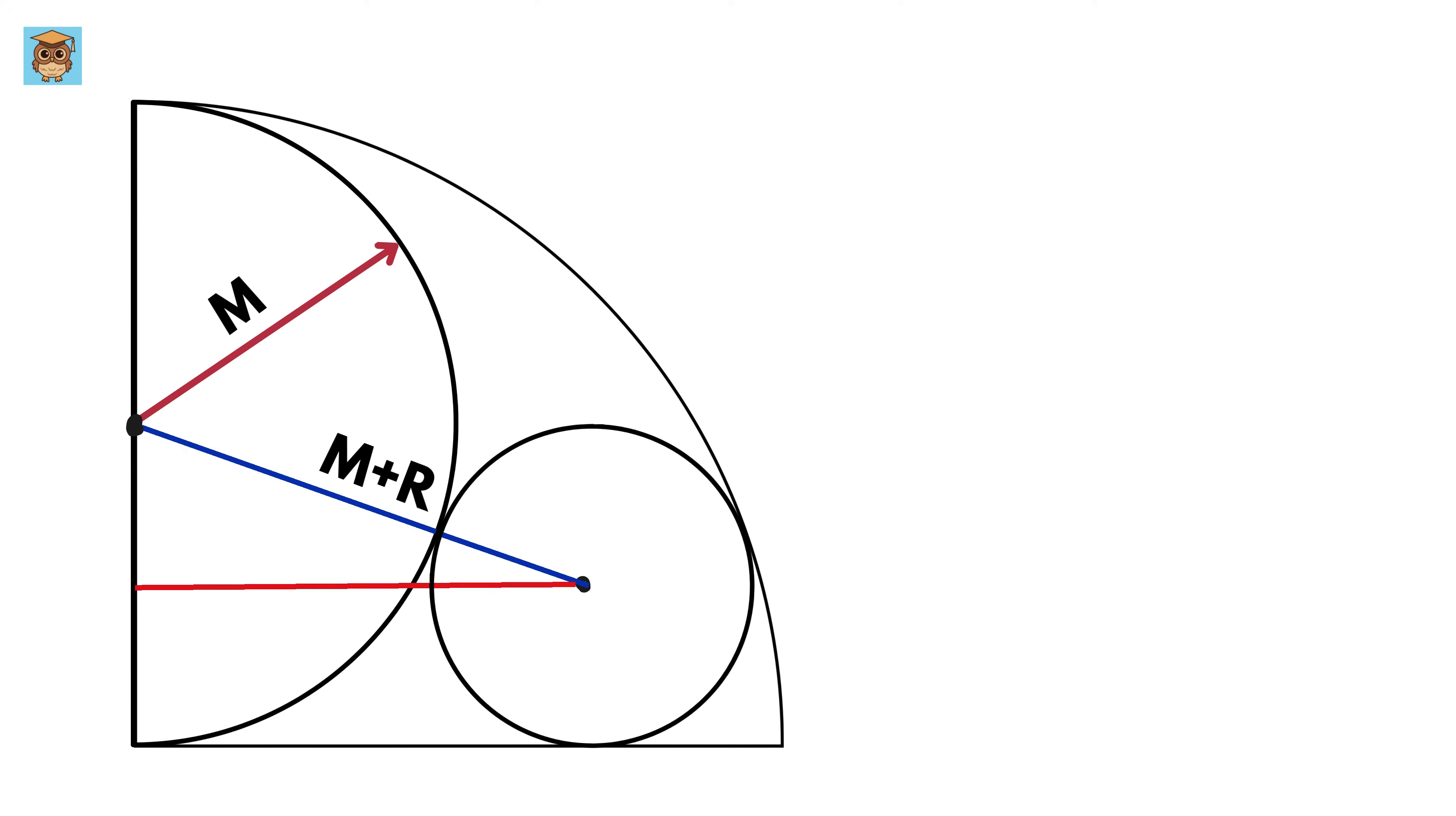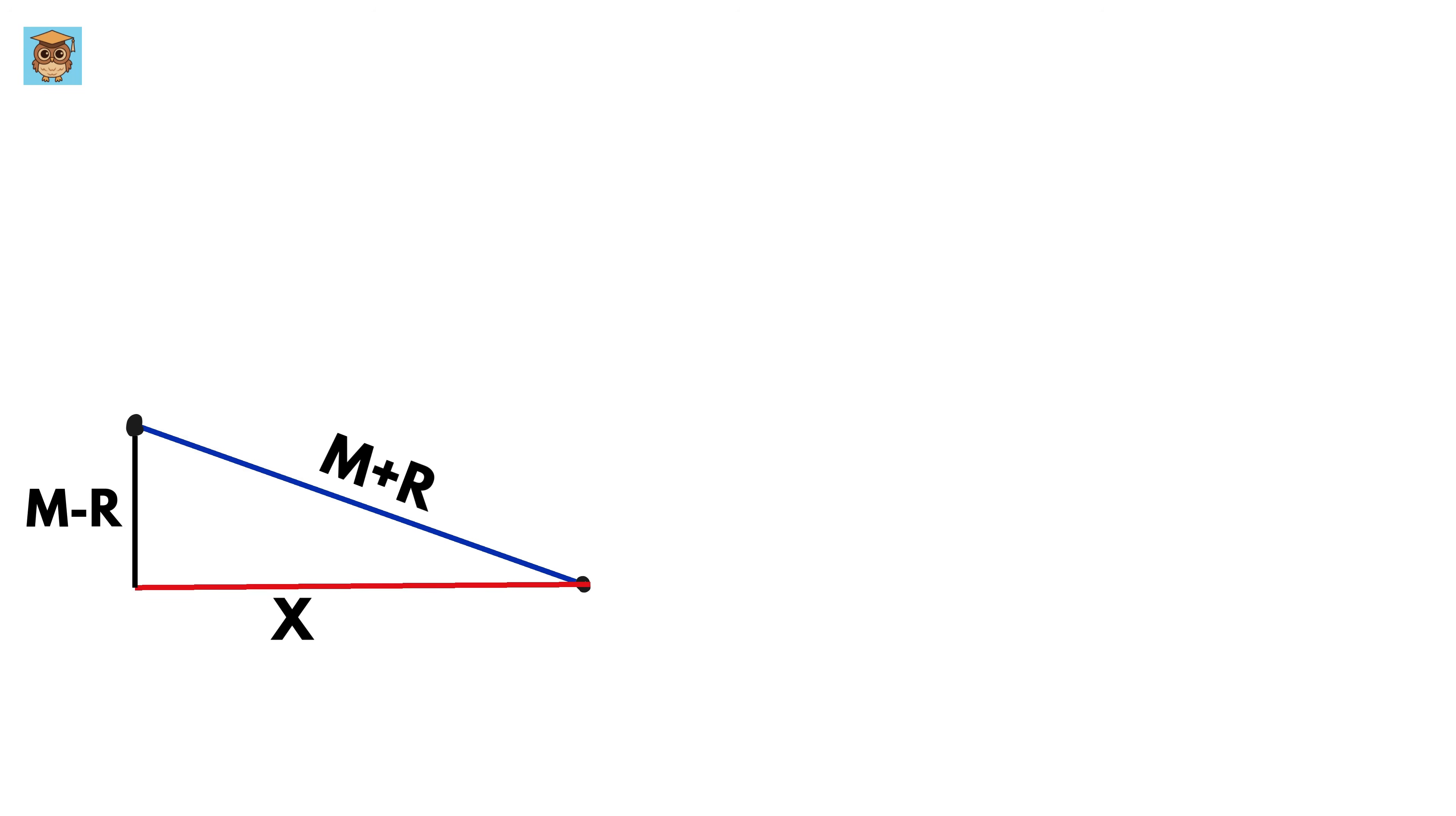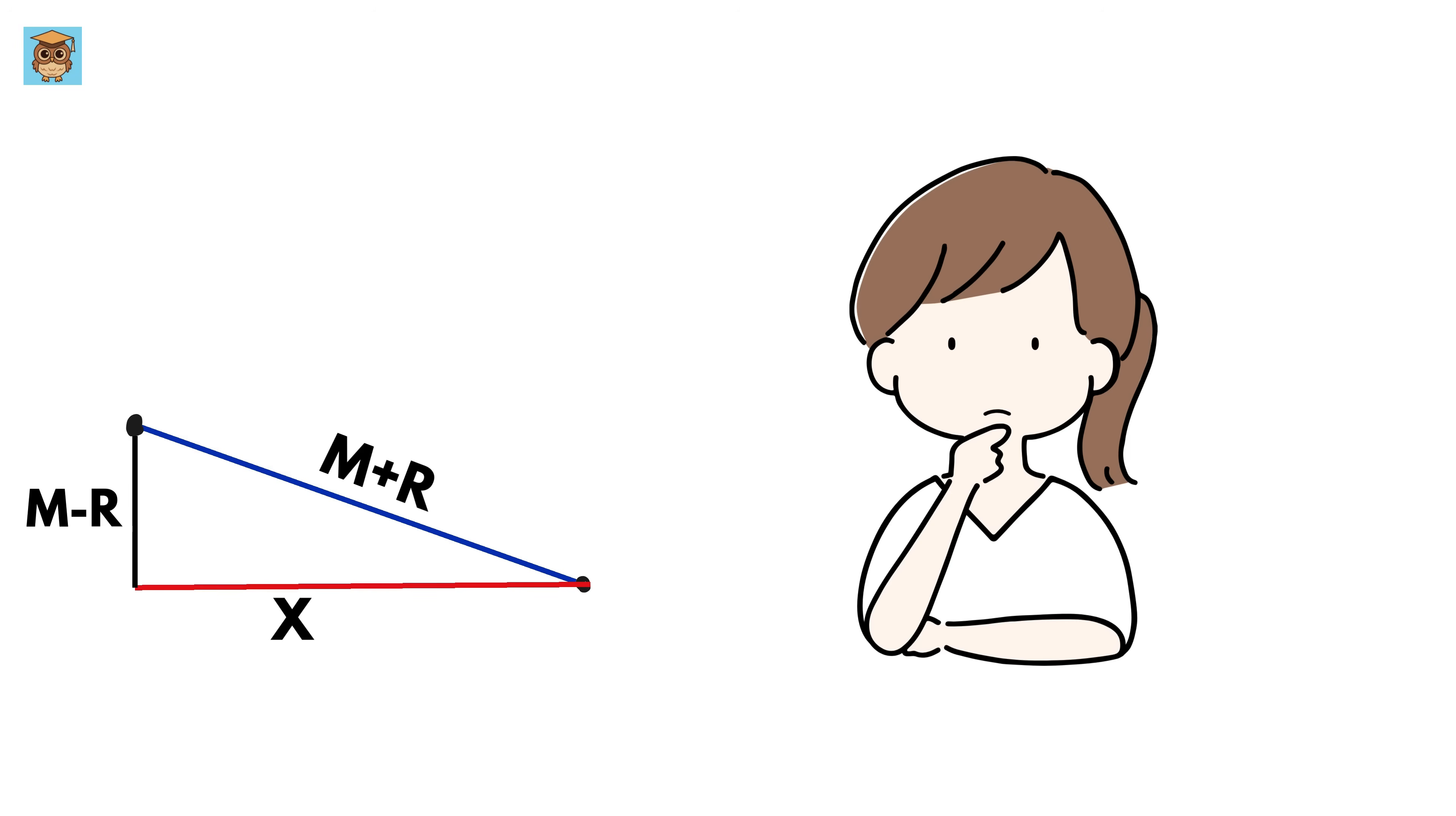Now let us draw a horizontal line like this. Now this is the same as the radius of this semicircle or m, and this is the same as the radius of this circle or r, so this length will be equal to m minus r. Now let us label this side length as x.